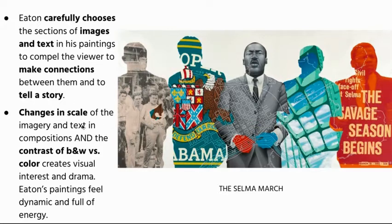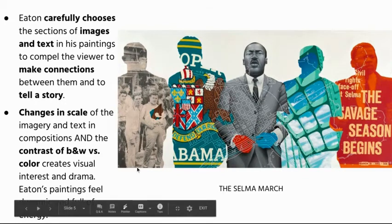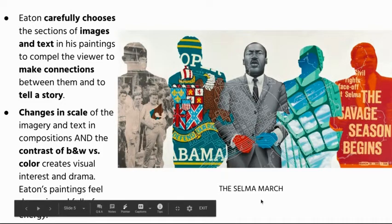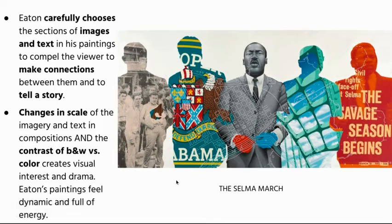Another thing that's really cool about Eaton's work, and that you should pay attention to in your own work, are the changes in scale. When he's putting these pieces together, he's really thinking about having some things that are really magnified, like this part of the flag or this text, and then having some things that are sort of normal size. Dr. Martin Luther King Jr. fits the size of his silhouette perfectly, and then you have all of these scary figures inside the silhouette of another guy, so they're much smaller. Having that change in scale, and the contrast of black and white images with vividly colored images, creates a lot of visual interest and makes the paintings feel very energetic.